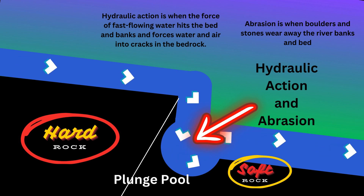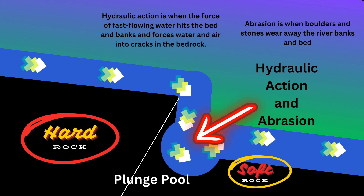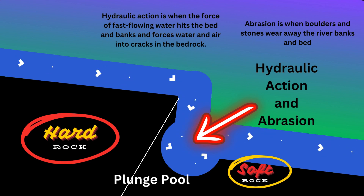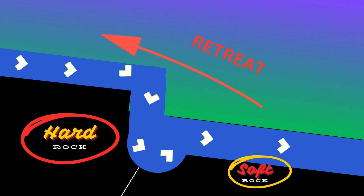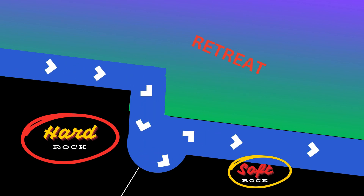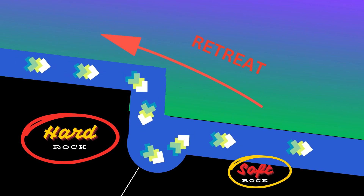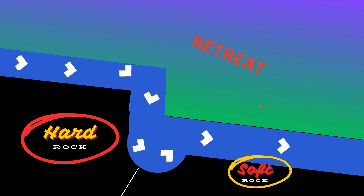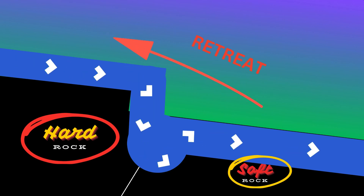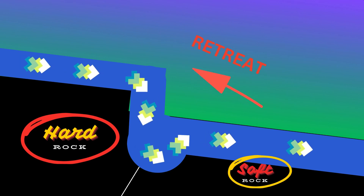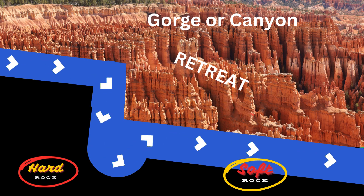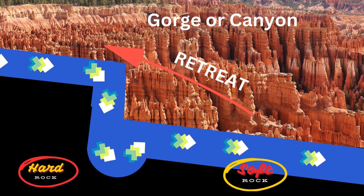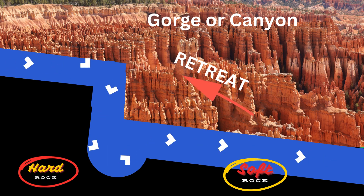As the water continues to erode the rock at the base of the waterfall, the waterfall may gradually retreat upstream over time as erosion continues. This leaves a gorge or a canyon.